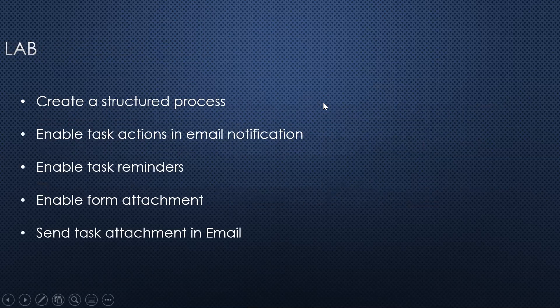In this video, we are going to cover a lab in which we are going to create a structured process. In this process, we will enable task actions in our email notification — task actions means approve or reject actions. We can enable task reminders — if a user will not take action on a particular task, we can send a reminder. We can enable form attachments — if a user is filling a form, we can send this form as an attachment in an email. We can also send task attachments in our email, for example if a user is applying for a reimbursement and they want to upload their bills.